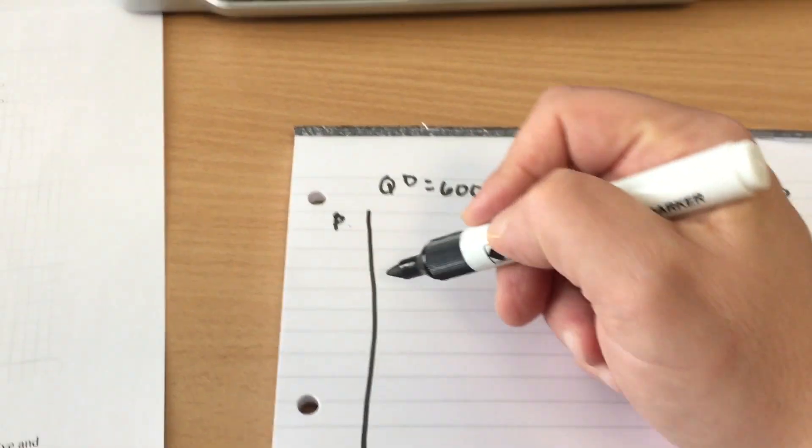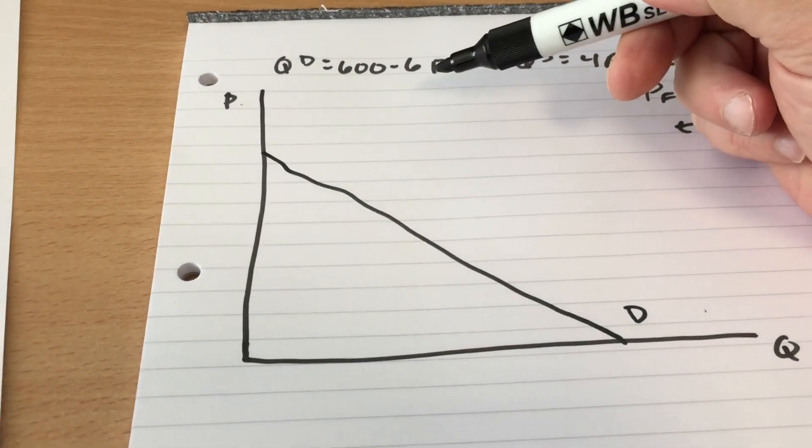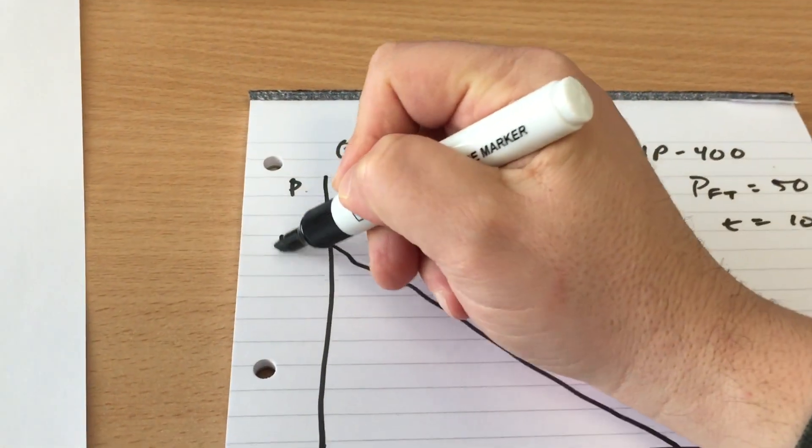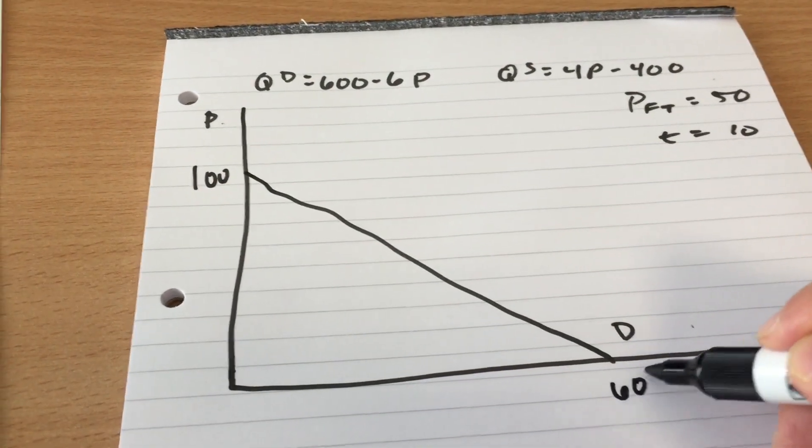So first thing we want to do is draw in our demand curve. So when the price is 100, quantity demanded is 0. When the price is 0, quantity demanded is 600.